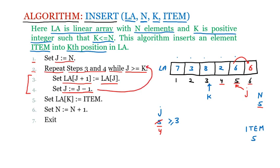Condition is true again, so we execute step three: LA[j+1] = LA[j]. Now j is four, so j+1 is five — LA[5] = LA[4]. The value two is copied to position five, replacing the earlier value. Then step four: j = j minus one, so j decrements to three. The loop goes back to check the condition — three is greater than or equal to three, which is true.